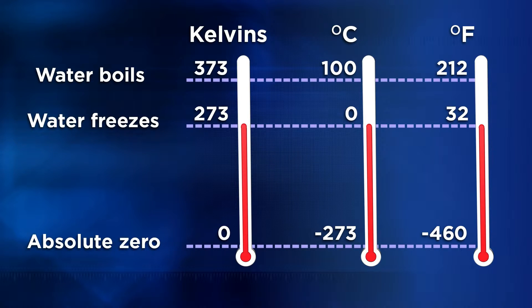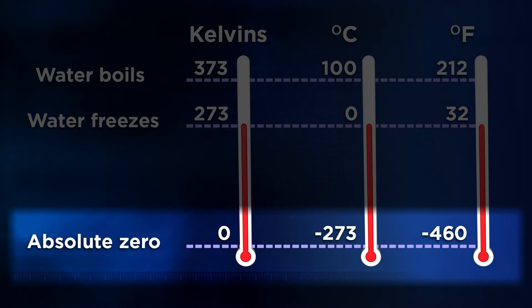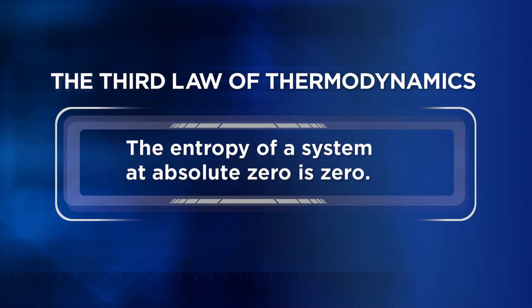William Thompson, also known as Lord Kelvin of Belfast, Ireland, proposed a scale for measuring temperature based on absolute zero. His Kelvin scale, in common use by scientists, placed absolute zero at a value of negative 273 degrees Celsius. This Kelvin scale also serves as the basis for the third law of thermodynamics, which states that the entropy of a system at absolute zero is zero.